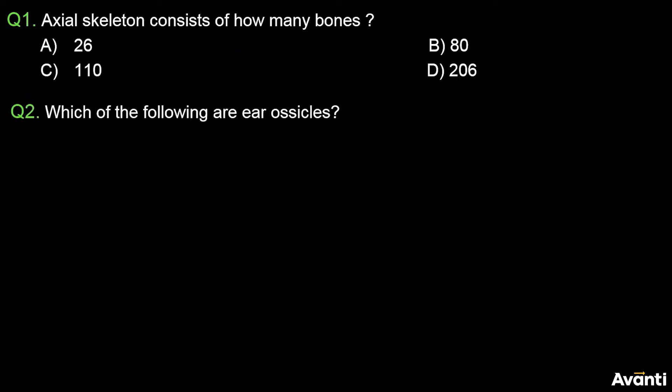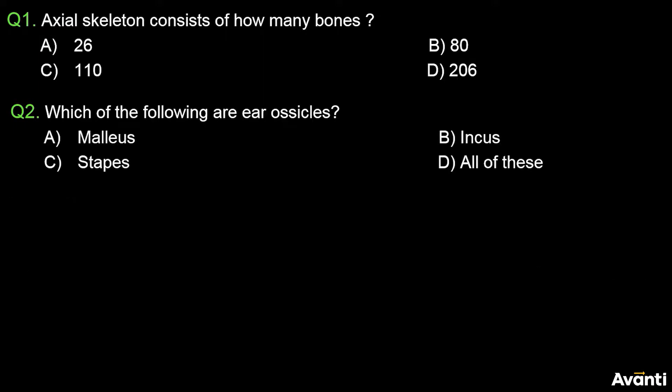Question number 2: Which of the following are ear ossicles? Option A: malleus, Option B: incus, Option C: stapes, Option D: all of these.